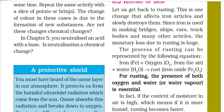When iron is used in making bridges, ships, cars, trucks, and many other articles, the monetary loss due to rusting is huge. Iron (Fe) reacts with O2 from the air plus H2O (water or moisture) to form rust — iron oxide, with the formula Fe2O3.